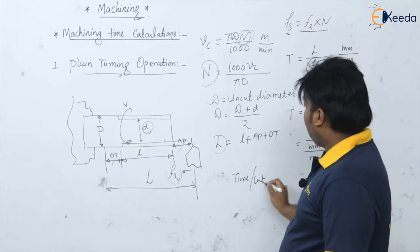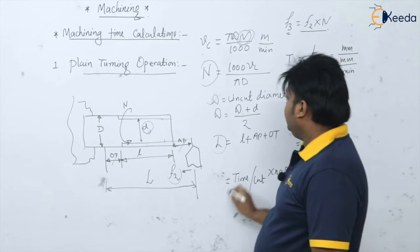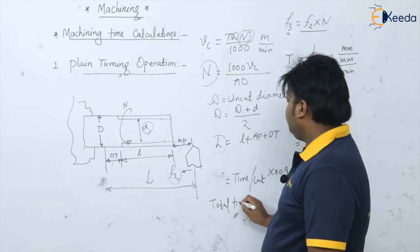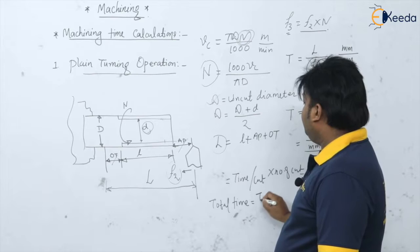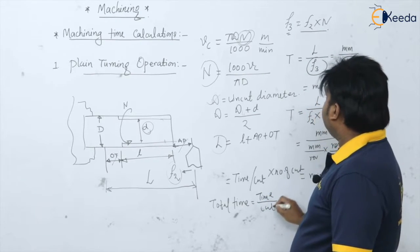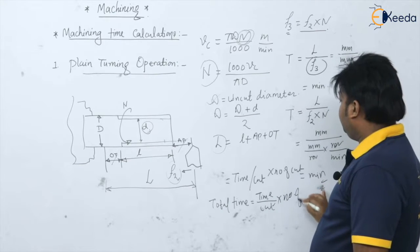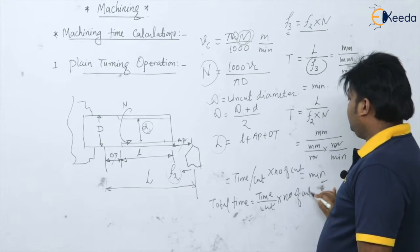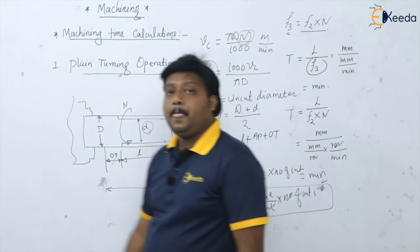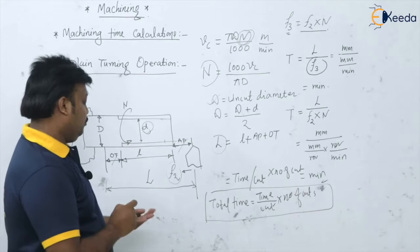That is the time per cut. If you have multiple cuts, multiply by the number of cuts to get the total time: total time = (L / (f2 × N)) × number of cuts. In this way you can calculate the machining time for turning.